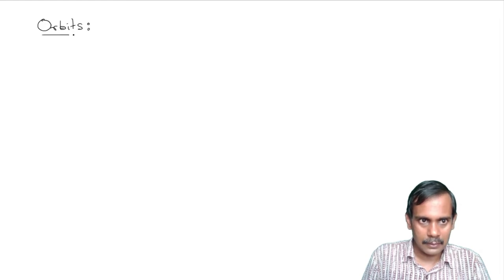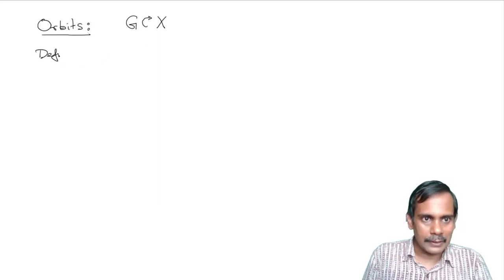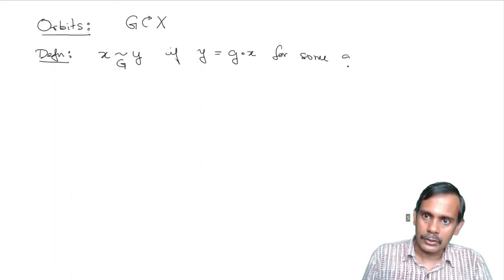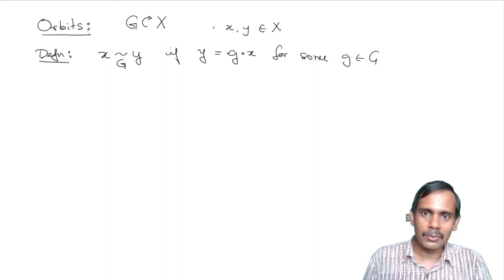The most important feature of a group action is the notion of an orbit. Suppose we have a group G acting on a set X. We define a relation: X is related to Y under G if Y equals G dot X for some G in G. So two elements of the set X are related if there exists a group element which takes the first one to the second.